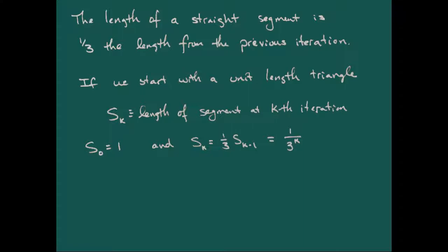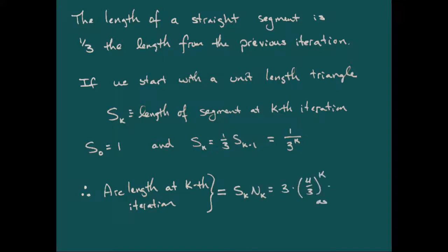And so putting this together, the arc length at the kth iteration is just going to be the product of s sub k times n sub k, which leaves us with three times four-third to the k power. And of course, as k goes off to infinity, that arc length is going to head off to infinity. And so this particular curve has an unbounded length to it.